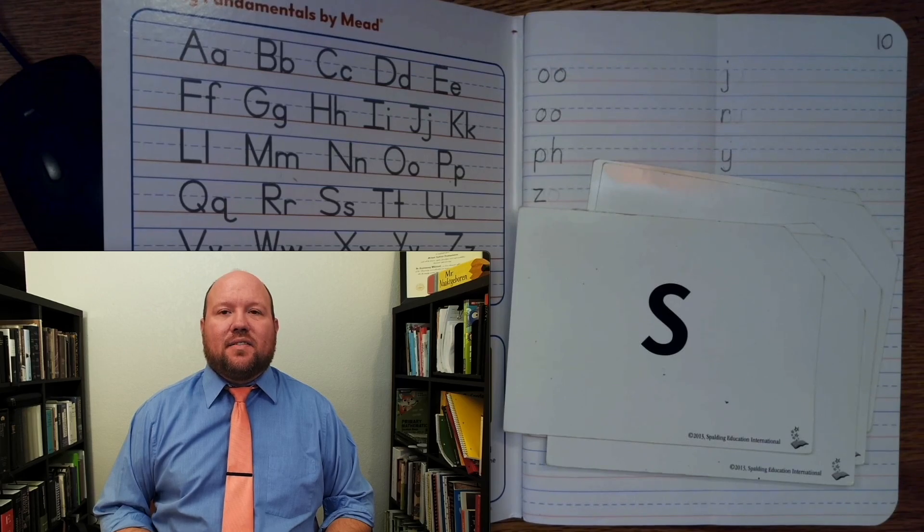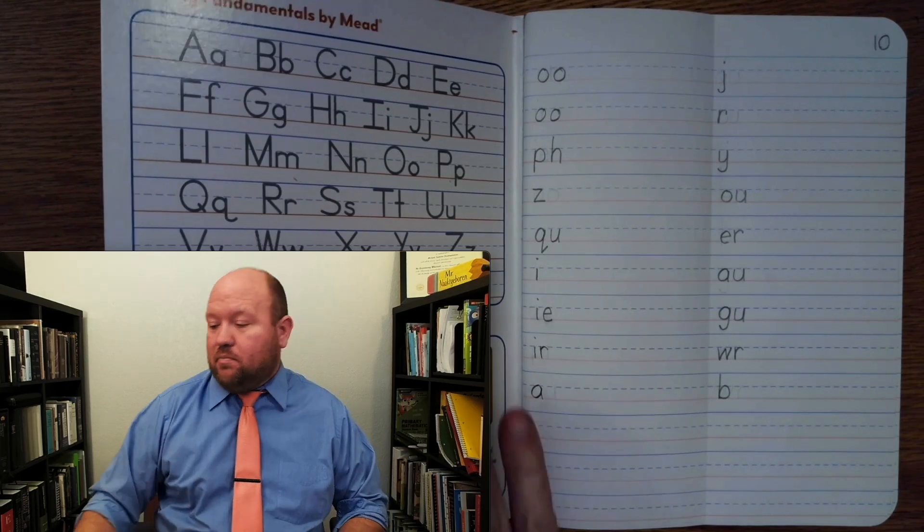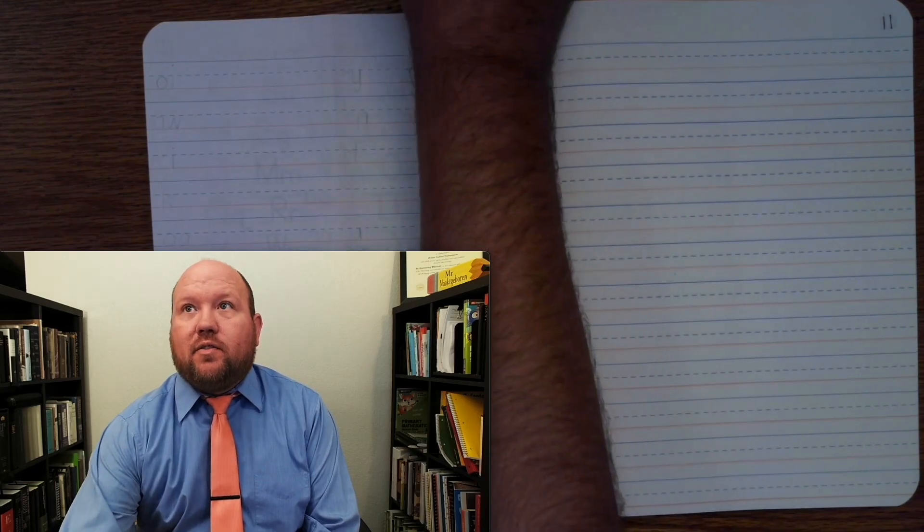All right, now we're going to do our written phonogram review. We have our book open to page 10. We're going to turn over to page 11, but we are not going to write on page 11. We're going to write on the back of page 10.